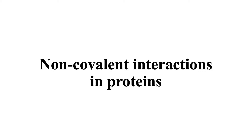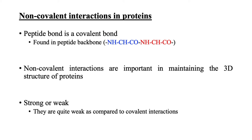In this lecture, we will talk about non-covalent interactions, particularly in proteins. If you remember, in our previous lecture, we discussed that amino acids are joined together by a peptide bond, which is a type of a covalent bond. We also discussed that the peptide backbone is made up of repeating units of NH, CH, CO, where NH represents the amino group, C represents the alpha carbon, and CO represents the carboxyl group. These repeating units join together by a peptide bond and make a peptide backbone.